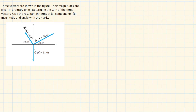Vector C has a magnitude of 31.0 and is directed downward. We are going to solve this using the component method — resolving each of the vectors into its x and y components. Let us start with vector A.